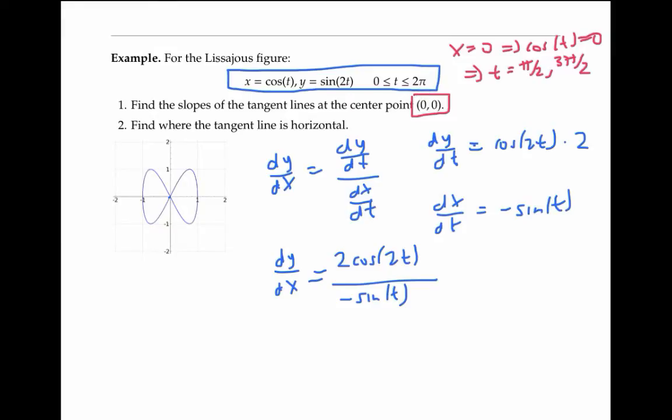And it's easy to check that when t has these values, then y, which is sin(2t), is also going to be zero. So we want to calculate dy/dx at t = π/2 and at t = 3π/2.